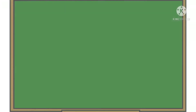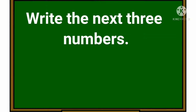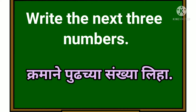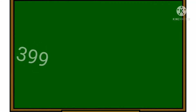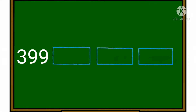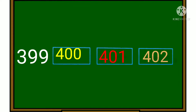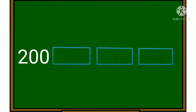Now see the next question — write the next three numbers. Some numbers are given and we have to write the next three numbers. Read this number: three hundred and ninety-nine. What will come after three hundred and ninety-nine? Yes — four hundred, then four hundred and one, four hundred and two.